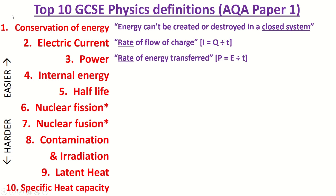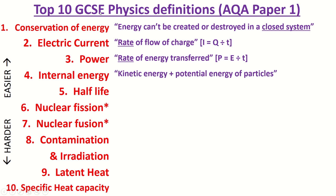Electric current — you need to know it's the rate of flow of electric charge. Rate means divide by time, so if you ever get stuck on this question you can use the equation I = Q divided by t (charge divided by time) to help you remember it.